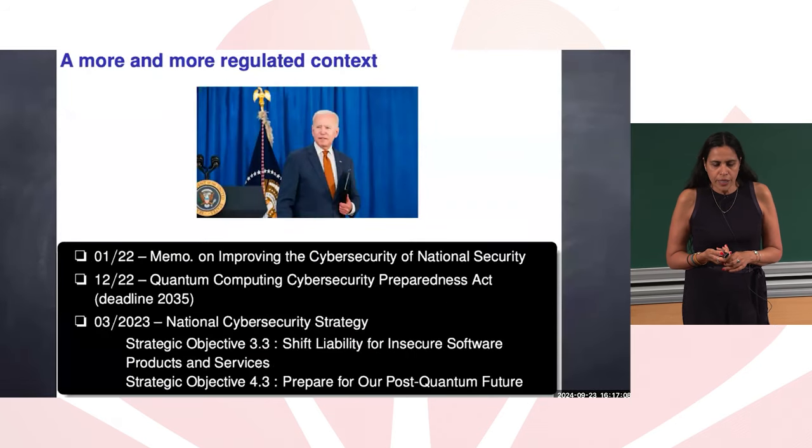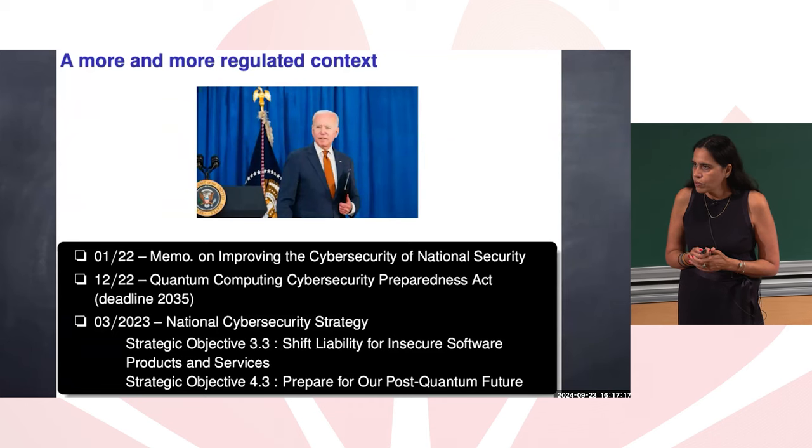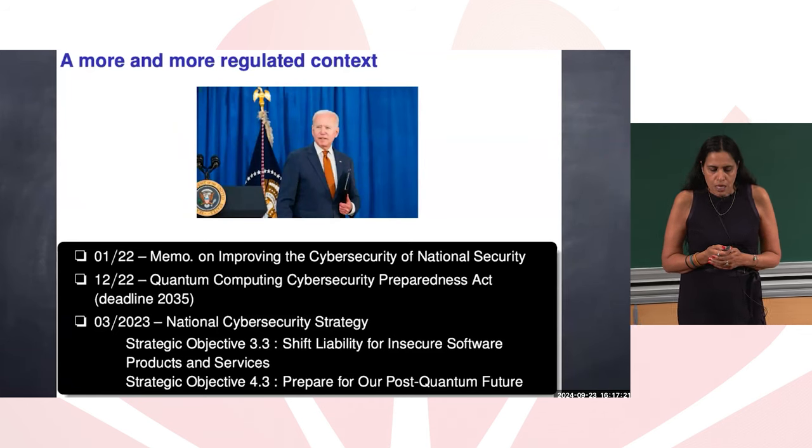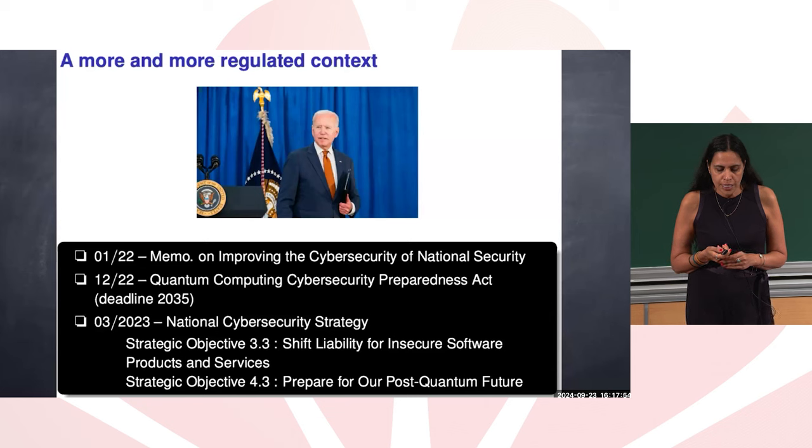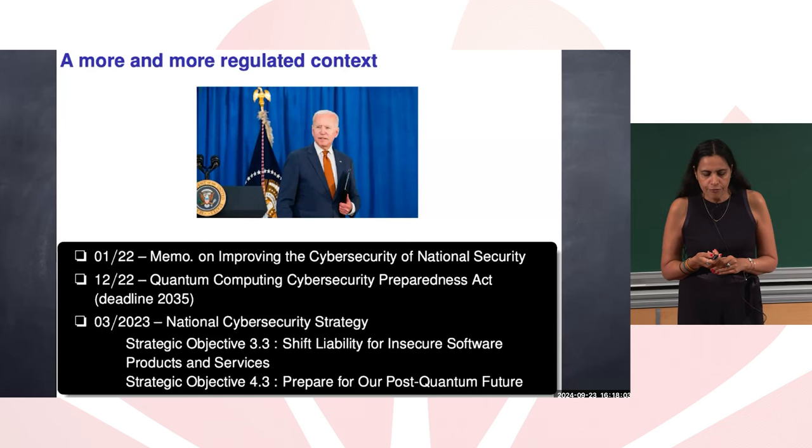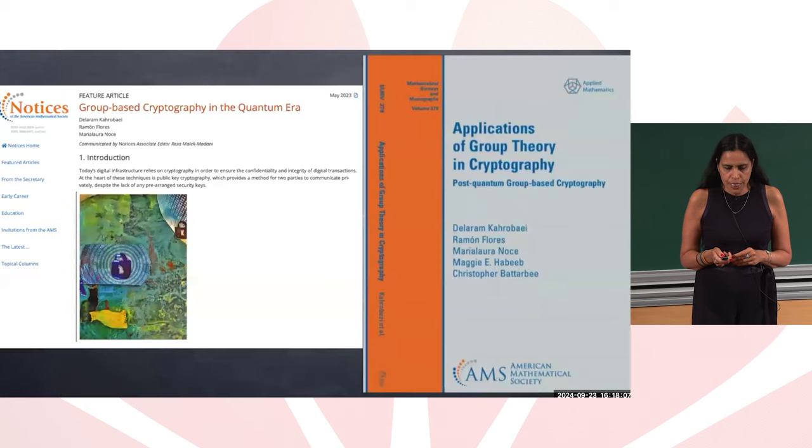Let's look at a more regulated context. In the United States, in January 2022, there was a memo on improving cybersecurity of national security. In the January same year, there was a memo on quantum computing cybersecurity preparedness act. And in March 2023, there was a release of national cybersecurity strategy that one objective is shift liability for insecure software products and services. And another strategic objective is prepare for our post-quantum future. So you see the importance of this.